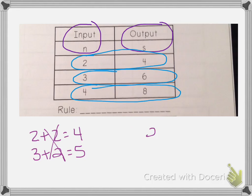I can also multiply. So two times two is four. Three times two is six. So that works. And four times two is eight. So that would work for each one.